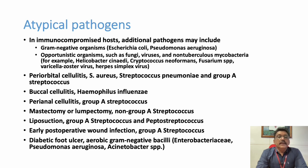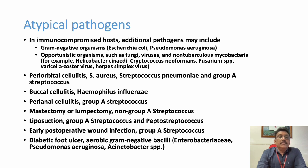Site-specific organisms include: periorbital cellulitis — Staphylococcus aureus, Streptococcus pneumoniae, Group A Streptococcus; buccal cellulitis — H. influenzae; perianal cellulitis — Group A Streptococcus; post-mastectomy or lumpectomy — non-Group A Streptococcus; post-liposuction — Streptococcus or Peptostreptococcus; early postoperative wound — Group A Streptococcus; and diabetic ulcers — aerobic gram-negative bacilli.